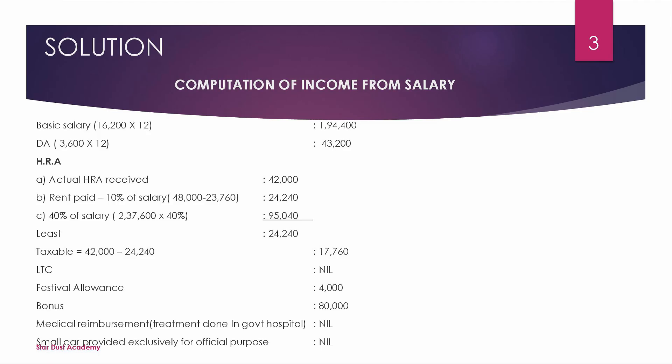Now, computation of income from salary. We list all items. Basic salary is ₹16,200 per month, so ₹16,200 × 12 = ₹1,94,400. Next, DA is ₹3,600 per month, so ₹3,600 × 12 = ₹43,200.